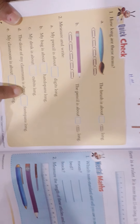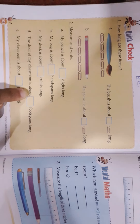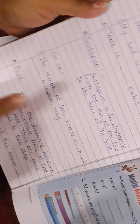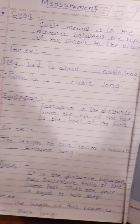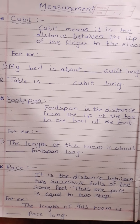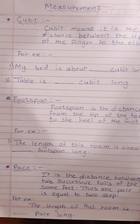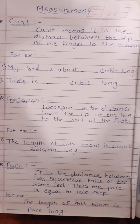Now you just solve this homework. Write in your notebook the measurement definitions — cubit, foot span, and pace. This is your homework.